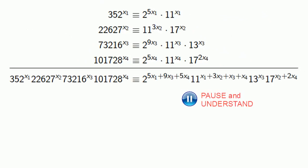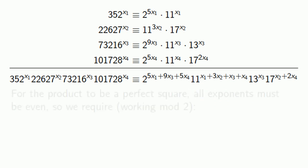For the product to be a perfect square, all of our exponents must be even, so we're going to require working mod 2.